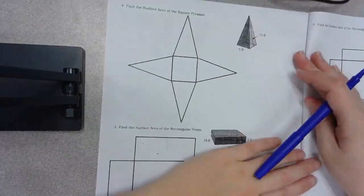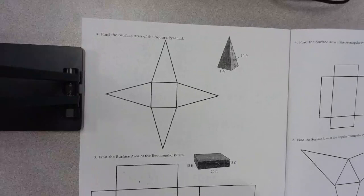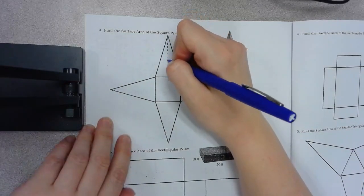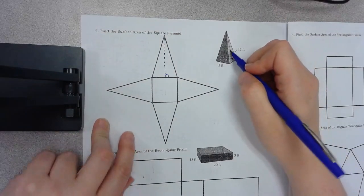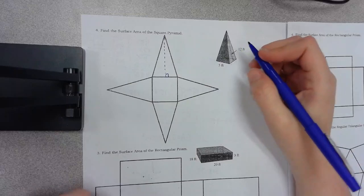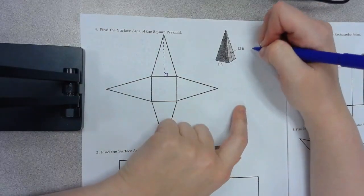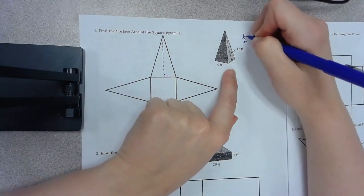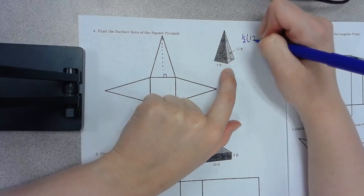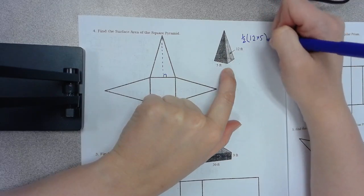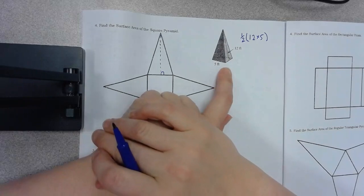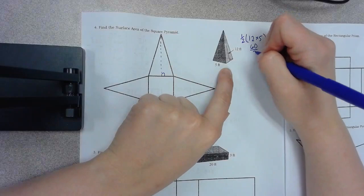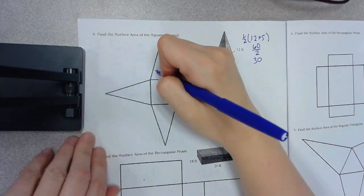This next shape is different than we have done before and it's a square pyramid. But these are all triangles. And it tells you that the height of those triangles is actually 12. So if I'm finding the area of these triangles, then I am 1 half times base times height. 1 half of 12 times 5. 12 times 5, 60 divided by 2 is 30. So these are all 30.